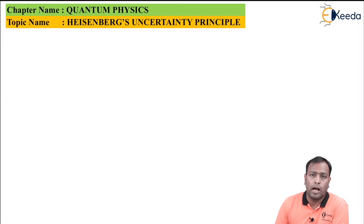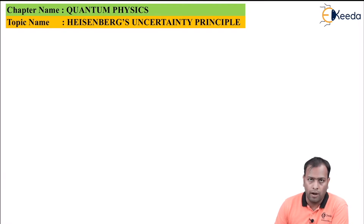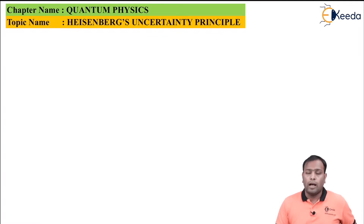This was however addressed by a German scientist Heisenberg. He said that an electron can never be found at a particular location, so in today's class we'll be exploring this in detail, so stay tuned.